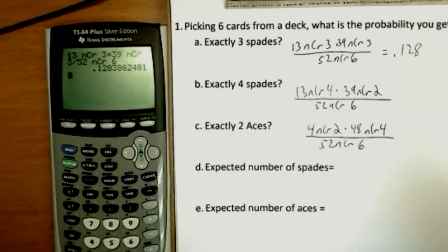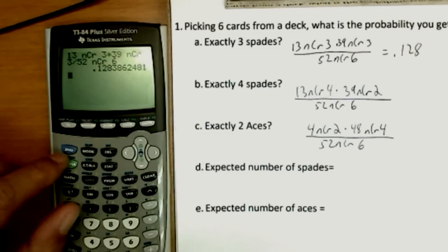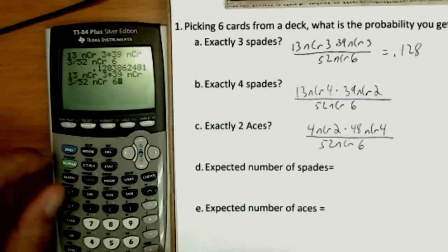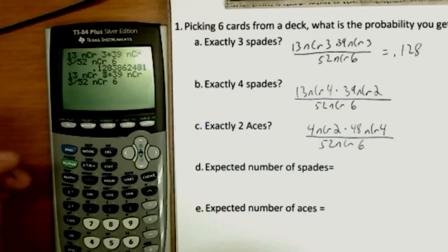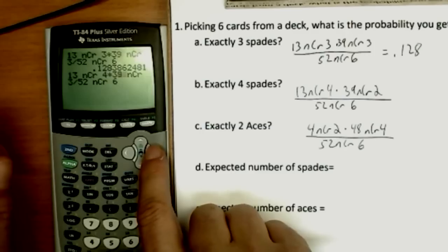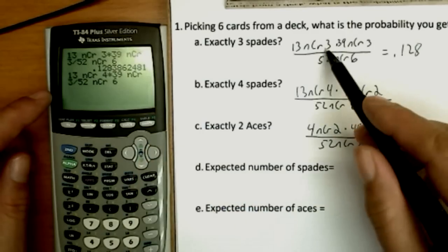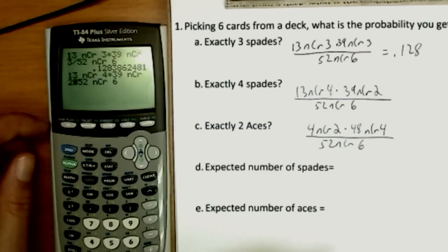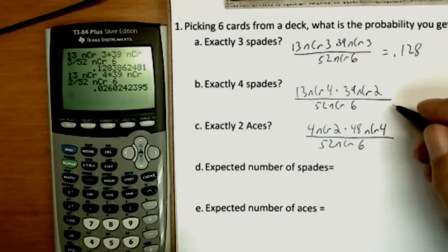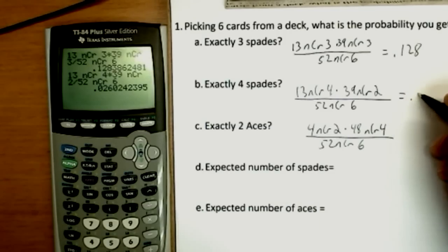Now to show the quick way of moving on to another type of calculation like this, I do second enter. I'll go back and change these numbers. Second enter is second entry. It pulls up your previous entry and allows you to re-work with it again. Saves me a little time in typing new numbers in because the only thing I have to change is the three to a four and the other three to a two. Now I get my next answer. So I'm not as likely to get four spades. 0.026 is my answer there.